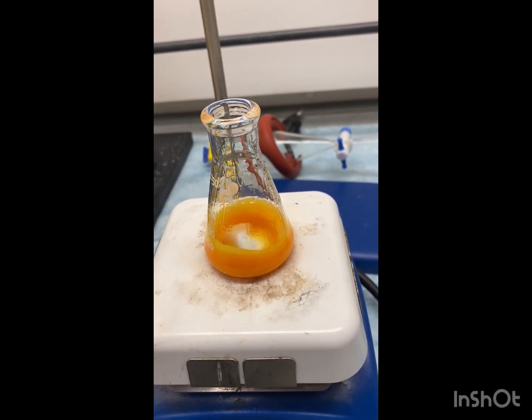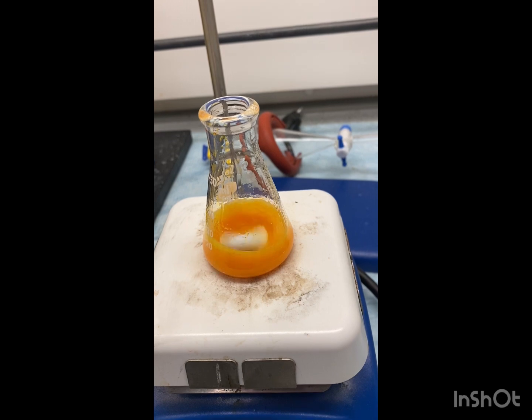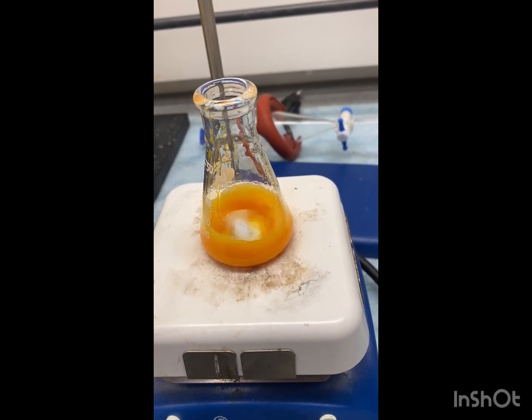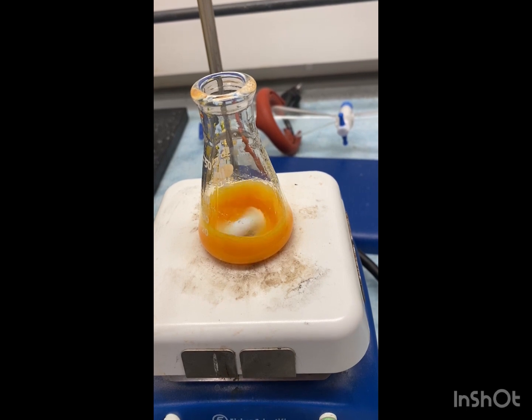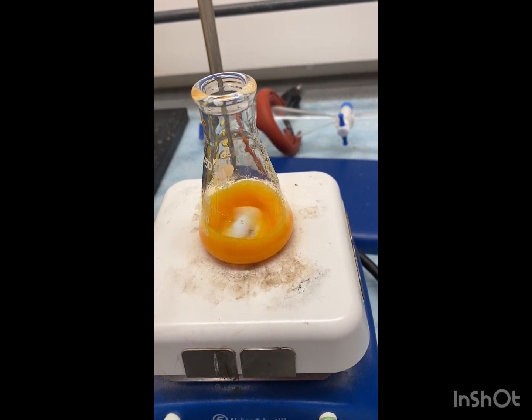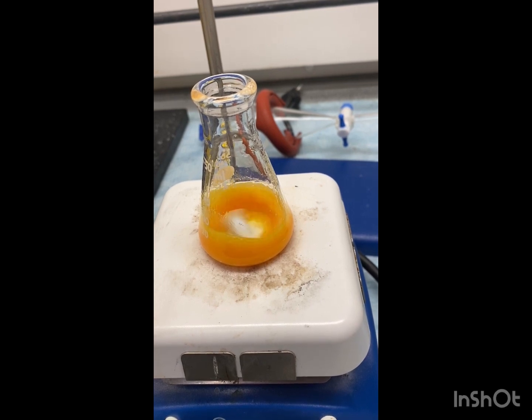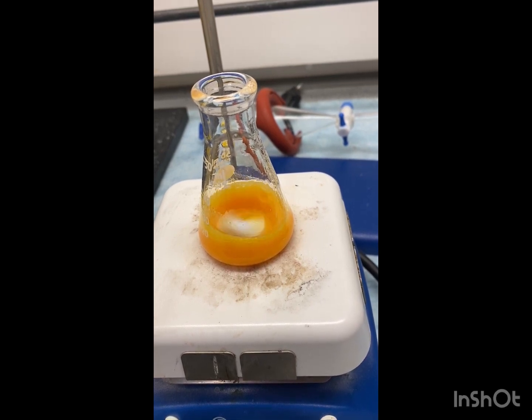All right, we're going to let this continue to heat for around 5 to 10 minutes. While we're letting this heat, we're going to go ahead and get your ice bath ready and get some methanol into your ice bath, so that way it's ice cold when we're going to use it after our vacuum filtration.